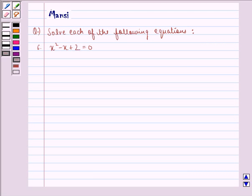Hello and welcome to the session. My name is Mansi and I am going to help you with the following question. The question here says, solve each of the following equations. Sixth equation is x squared minus x plus 2 equal to 0.